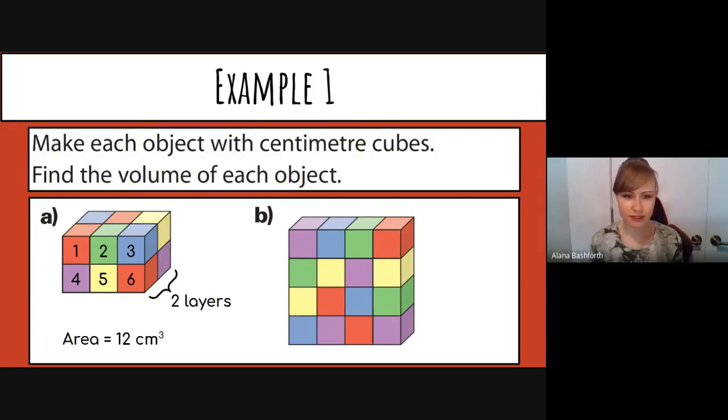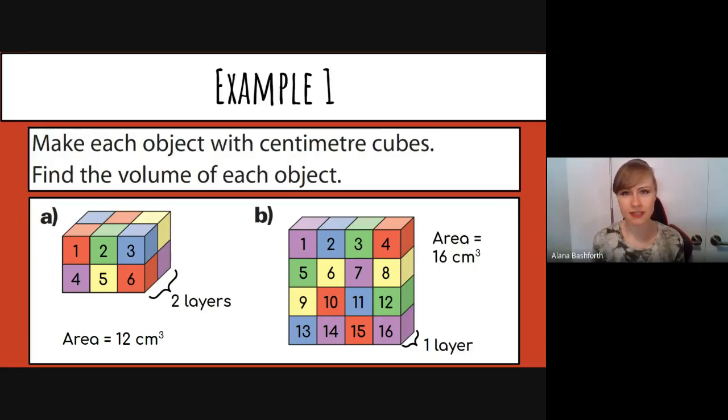This is the first layer. It has one, two, three, four, five, six there, and then you can see that there's two layers deep in it. It's helpful that these are colorful. So the area is 12 centimeters cubed because we've got six cubes in the front and six cubes in the back, making it have 12 cubes. The second one has 16 cubes and it's one layer deep. There's not a second layer. So that means the area is 16 centimeters cubed for that one.